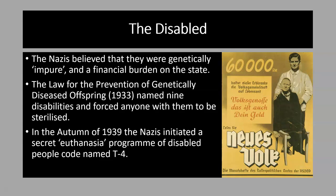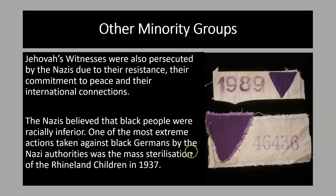The programme did become public knowledge and caused massive outrage. We've already learnt about Archbishop von Galen, who protested against the programme in a sermon. Under pressure from the public, Hitler eventually ordered a halt to the programme. But in total, it is estimated that over 70,000 people were killed at euthanasia centres, and over 5,000 children with disabilities were also killed.